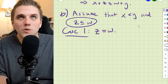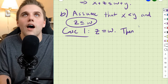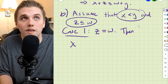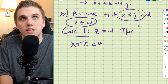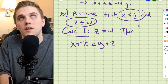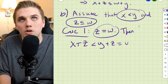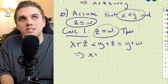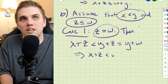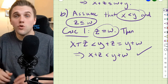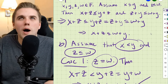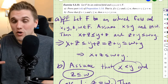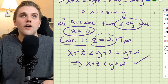Case one: if z equals w, then we can add z to both sides of the first inequality to get x plus z is less than y plus z. But since z equals w, this equals y plus w. So x plus z is less than y plus w, which is what we wanted to show. Addition is commutative in ordered fields, so any swap of y and w is fine.